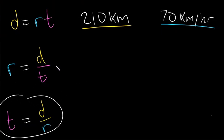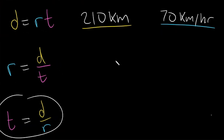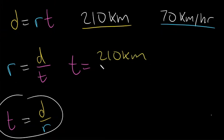You don't need to memorize three formulas. You can just pick one to memorize and plug in your numbers to solve for the missing variable. The easiest one to memorize is d equals rt, because there are no fractions to worry about and no risk of mixing up numerator and denominator. But we have them all written out here, so we'll use t equals d over r. Time is equal to 210 kilometers divided by 70 kilometers per hour.